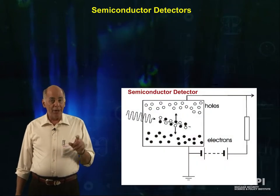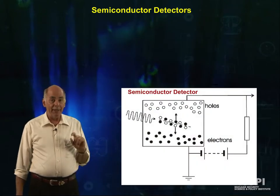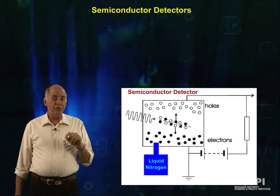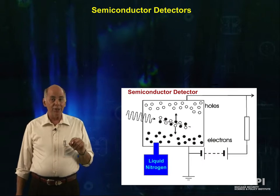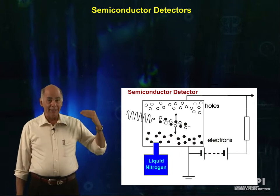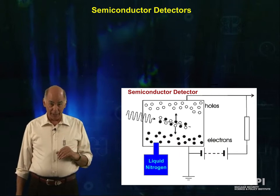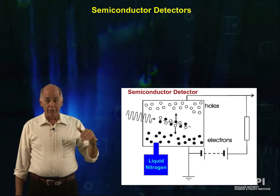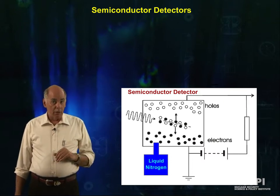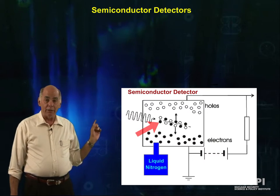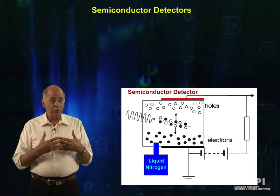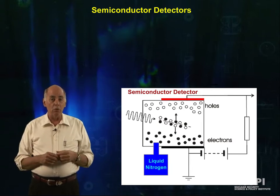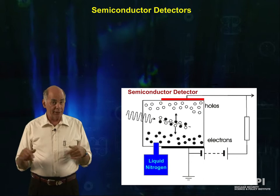We can exploit this narrow band gap to make a radiation detector. If we cool the semiconducting material down to liquid nitrogen temperatures, the conduction band will be empty because thermal energies are now too low to kick the electrons into the conduction band, and the conduction band quickly drains of electrons. Radiation interacting in the semiconductor can promote electrons into the conduction band. An applied voltage will sweep these electrons and the holes left by these missing electrons out of the detector.